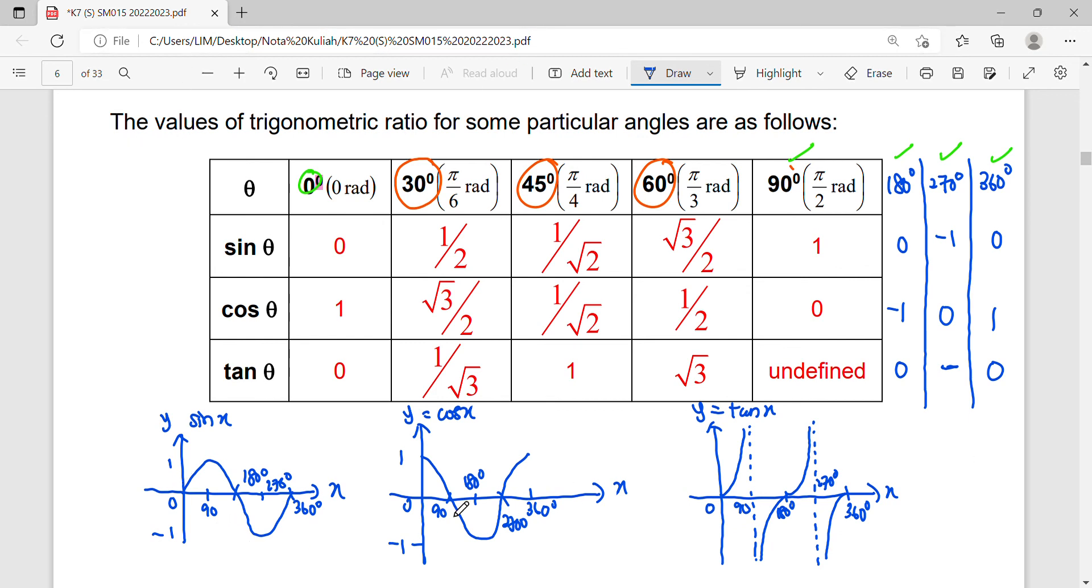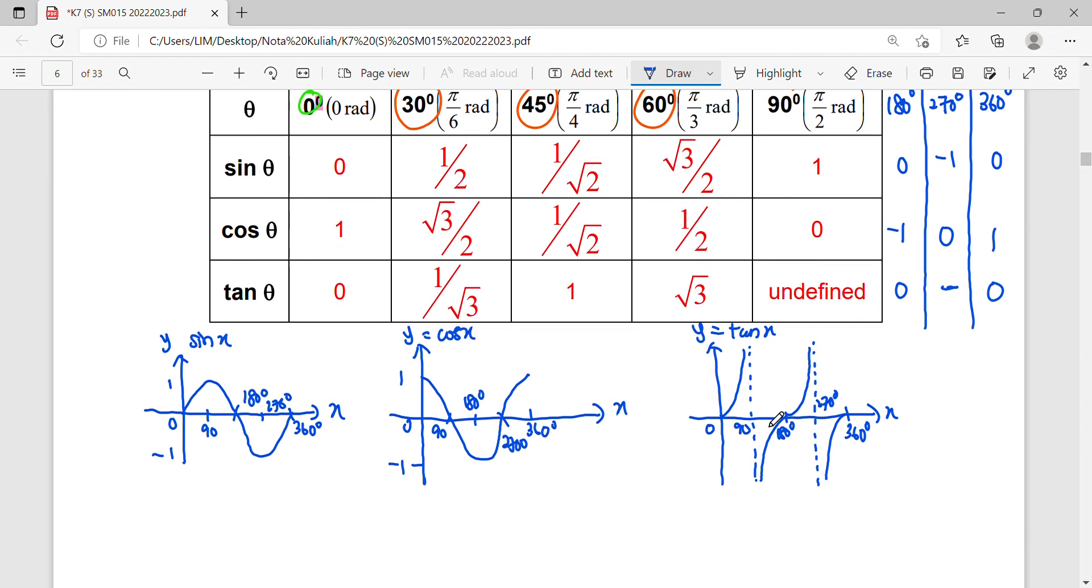You can notice we don't have any cosecant, secant, or cotangent because these trigonometry functions are derived from our three basic trigonometry functions. For example, cosecant 30 degrees: we don't have it in the table because cosecant is derived from one over sine. That's why all special angles involve just the three basic trigonometry functions. Cosecant can be derived from sine, secant from cosine, and cotangent from tangent.